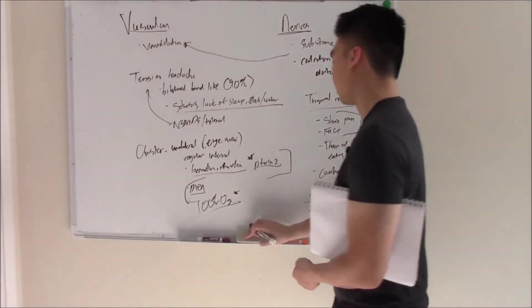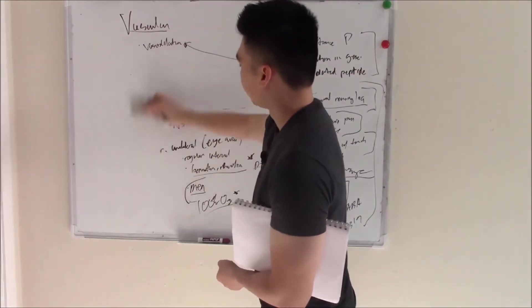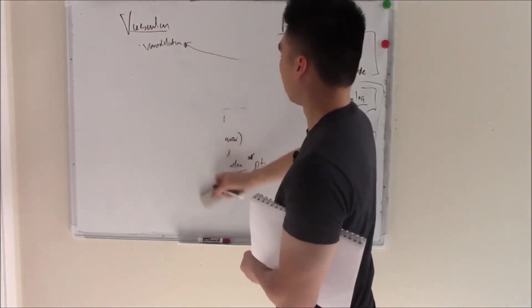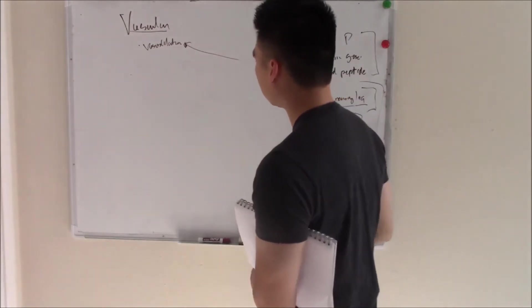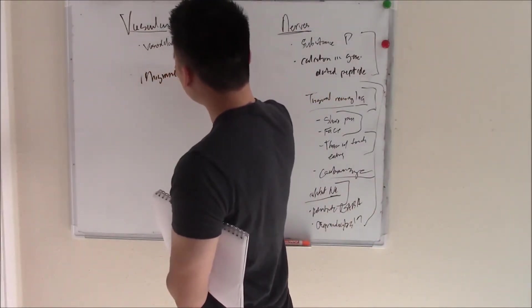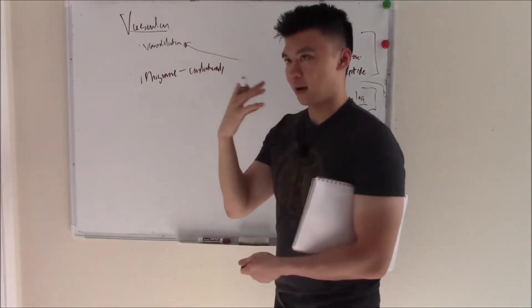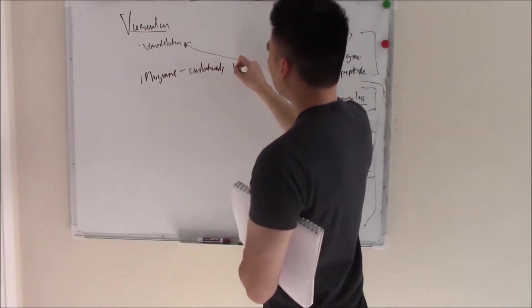There's one more headache and it's a big one, and that would be migraines. Migraines usually show up as a unilateral headache that persists for a long time, throbbing headache.